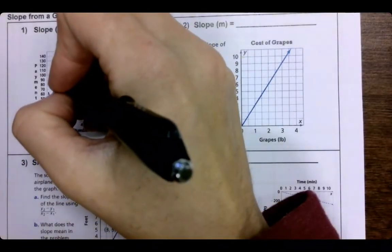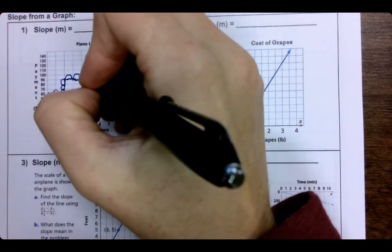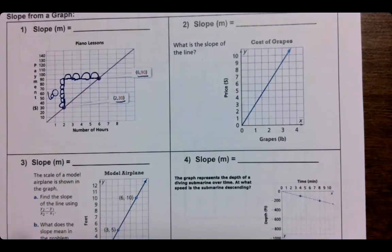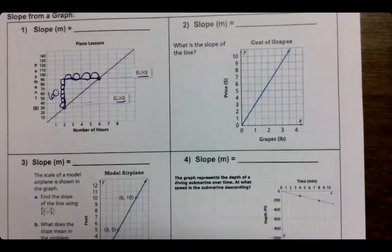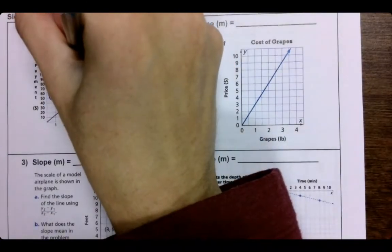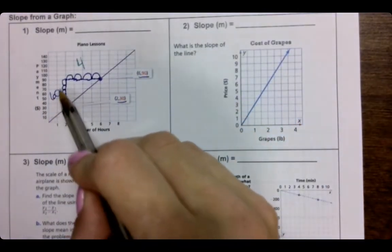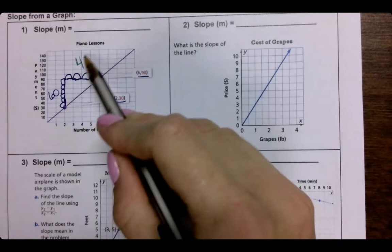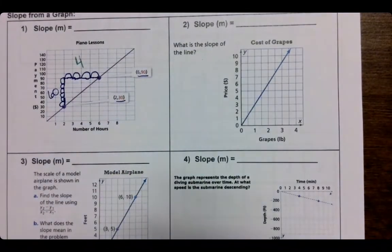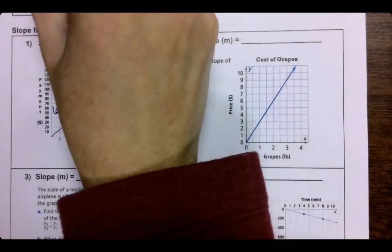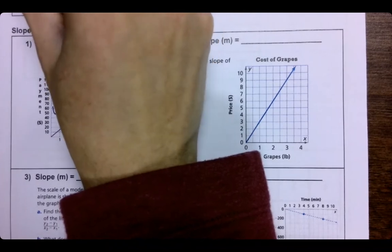And then this is one, two, three, four, and that is going by ones. So that is one. And again, look, 90 to 30 is 60, two to six is four. So remember, we do our y over our x.